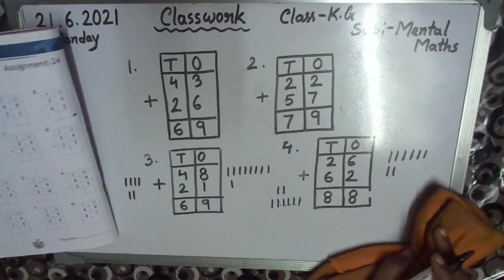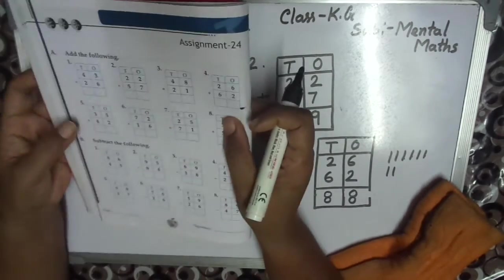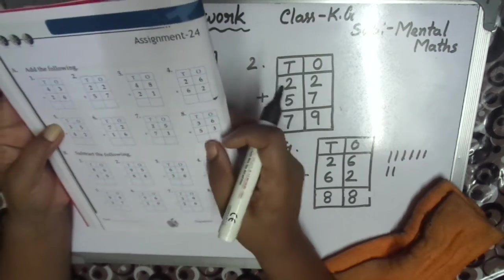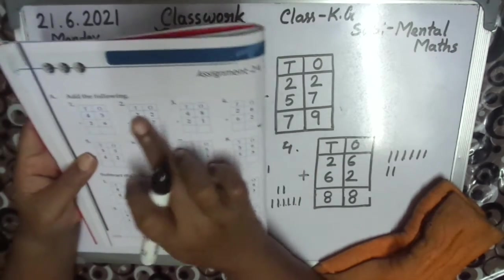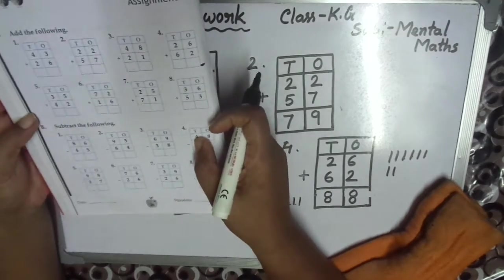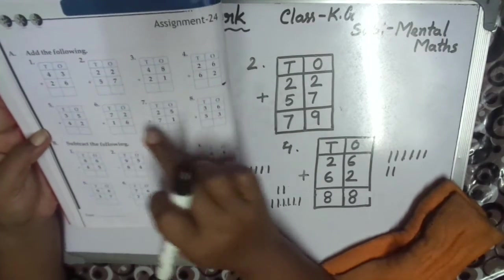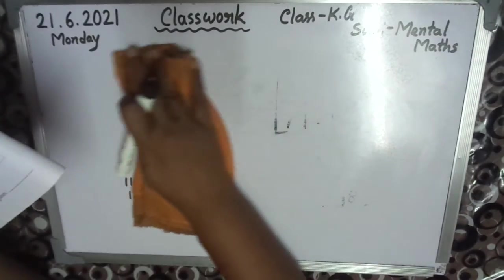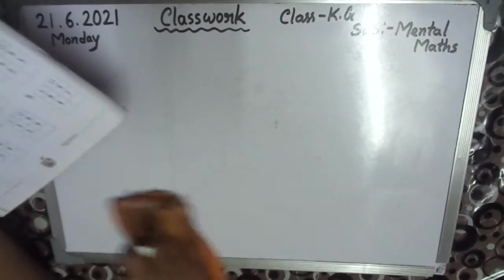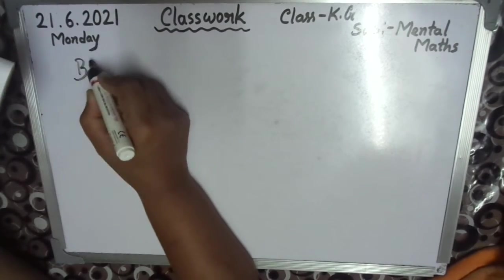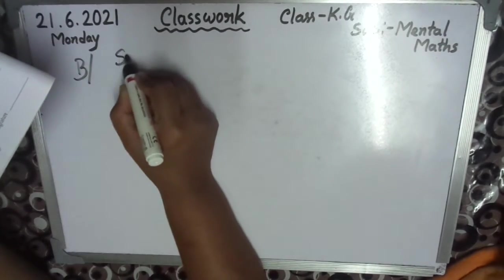I hope everyone understood. So do it on your own: 5, 6, 7, 8. Next, subtraction.